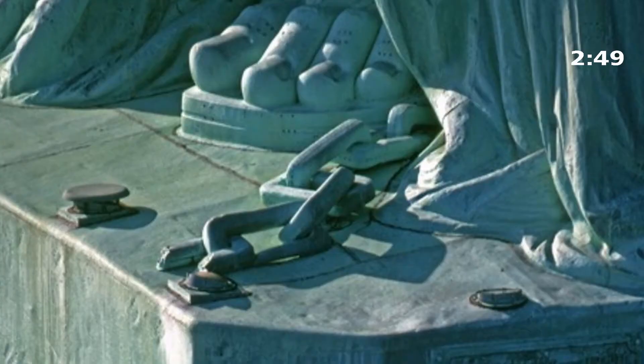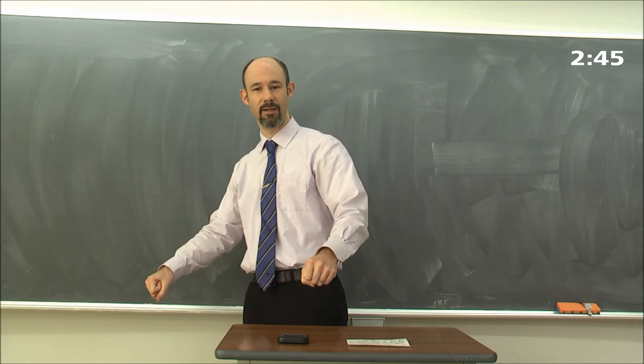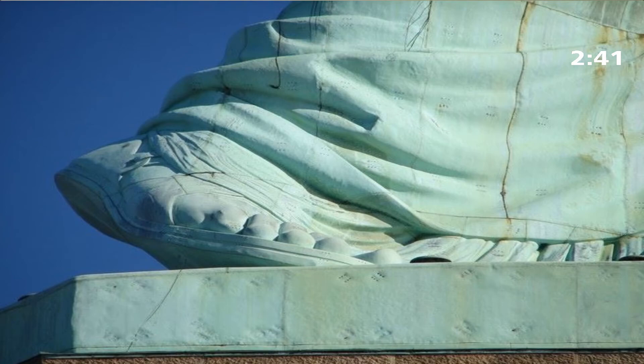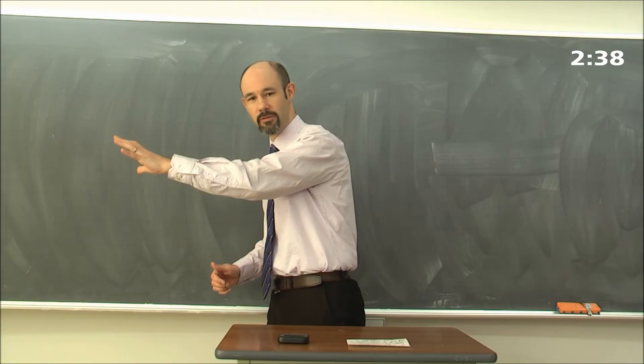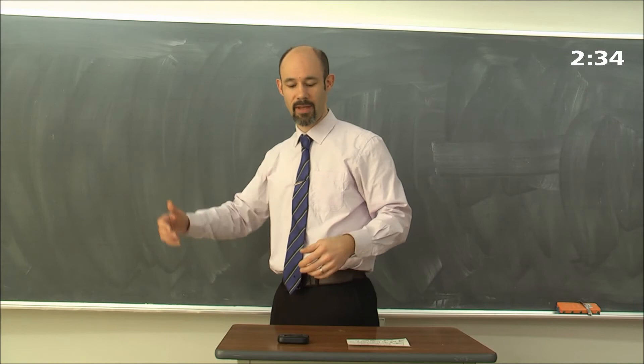She also has a broken chain in front of her. If you look at her feet, she's walking over a broken chain, symbolizing freedom. And if you look, I can't show you, but her back foot is raised, symbolizing she's walking forwards. So she's walking over a broken chain. It's all about freedom at the end of slavery.